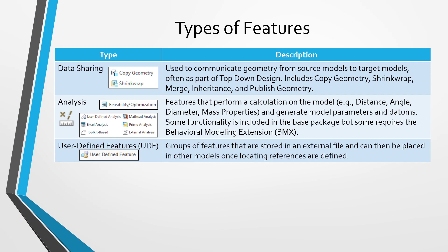Another class of features are called user-defined features. This is where you take other features in your model — maybe an extrude, a rib, some rounds, some draft, and a hole — group them together, and store them in an external file with a .gph file extension. That way you can take that group of features and place it over and over again in the model you created it in or in other models, helping promote standards across your company to make sure you're using the same kinds of shapes and geometry consistently.